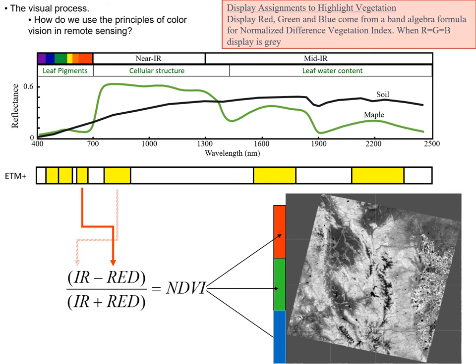We can also display things as grayscale. Here we're calculating the NDVI — Normalized Difference Vegetation Index — an index that tells you how green things are. It uses the contrast between infrared and red: infrared is bright where there is vegetation and red is dark, so infrared minus red is greater the more vegetation there is. Then you divide by infrared plus red to correct for overall brightness. NDVI is then assigned to all three color guns — red, green, and blue — so the higher the value, the brighter the grayscale.